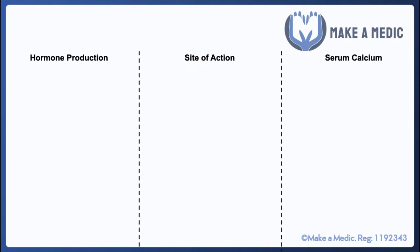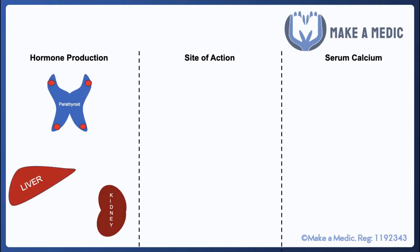To understand why calcium might be high, it's important to understand how it's regulated within the body. I've divided this slide up into three main sections. On the far right we have serum calcium, on the left we have the hormones that can affect the serum calcium, and in the middle we have the site of action of these hormones.